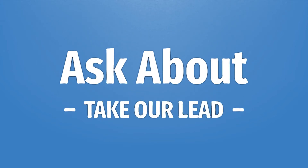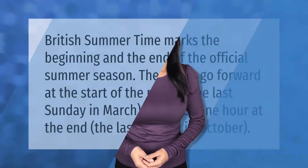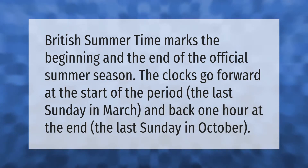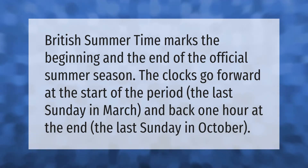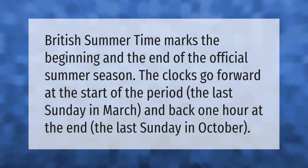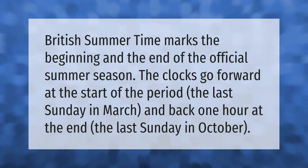British Summertime marks the beginning and the end of the official summer season. The clocks go forward at the start of the period, the last Sunday in March, and back one hour at the end, the last Sunday in October.